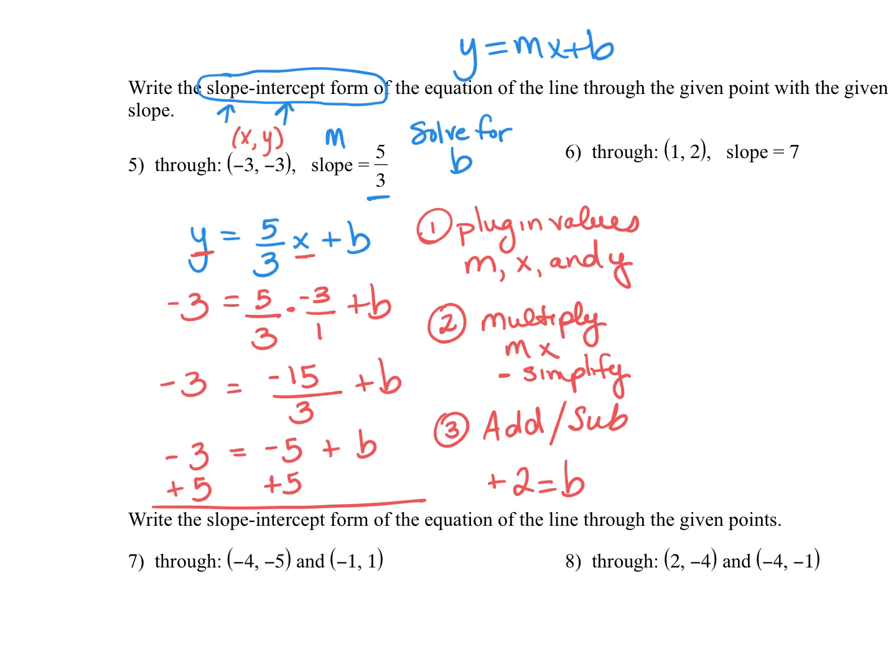But now that we've found b, we're not finished yet. I mean, we're finished finding the values that we need, but I now have to write the equation. And when we write the equation, remember, we're going to substitute in the value for m and the new b value I found. So my final answer is going to be y equals, my m is 5/3, and my b is a positive 2. So that is my final answer.